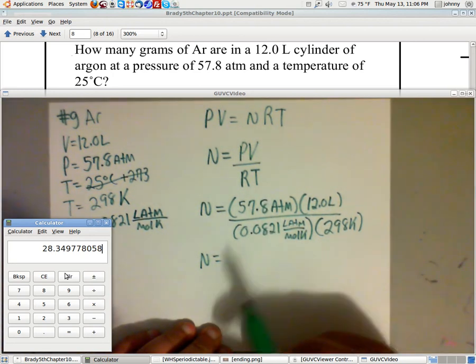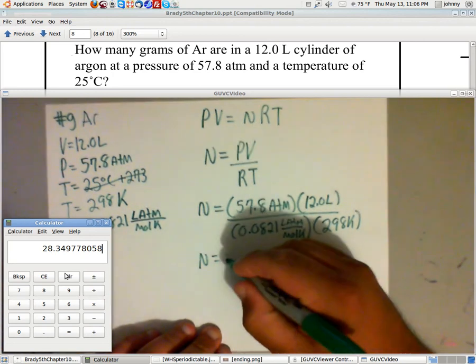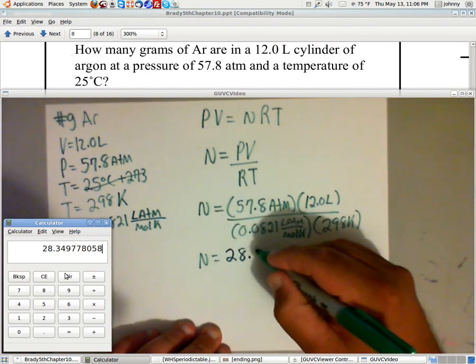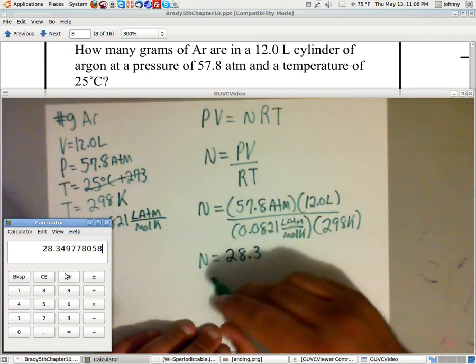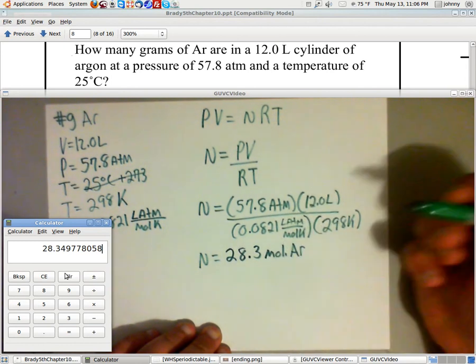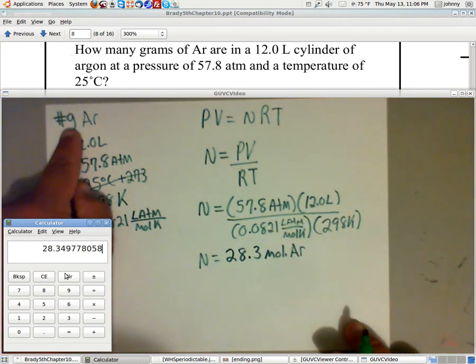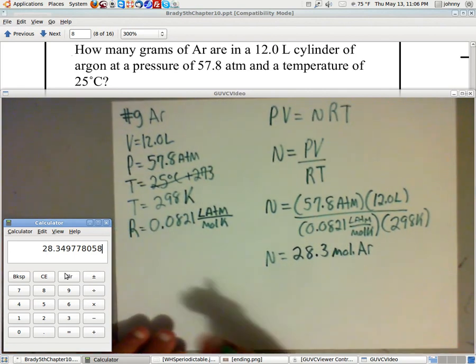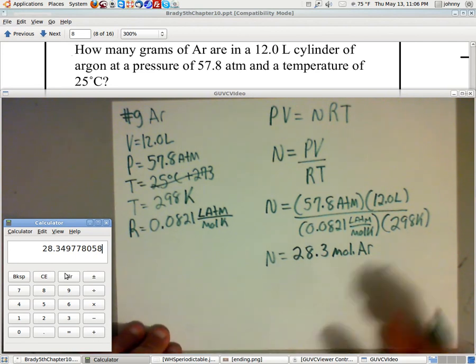Now, looking at this, I need to keep three sig figs. That's a gas constant. So don't use it and determine the number of sig figs because it's a constant. Just pretended it goes on forever. Well, judging from the sig fig rules, I should keep 28.3. Now remember, n is moles and that's moles of argon. The question wanted to know how many grams of argon. So I need to take this one step further. I need to set up a stoichiometry, a dimensional analysis step down here.